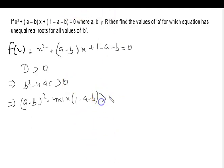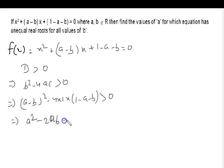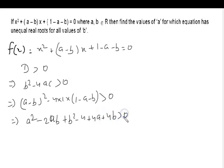We can write (a minus b) whole square equal to a squared minus 2ab plus b squared, and minus 4 times (1 minus a minus b), which gives us minus 4 plus 4a plus 4b, and this is greater than 0.